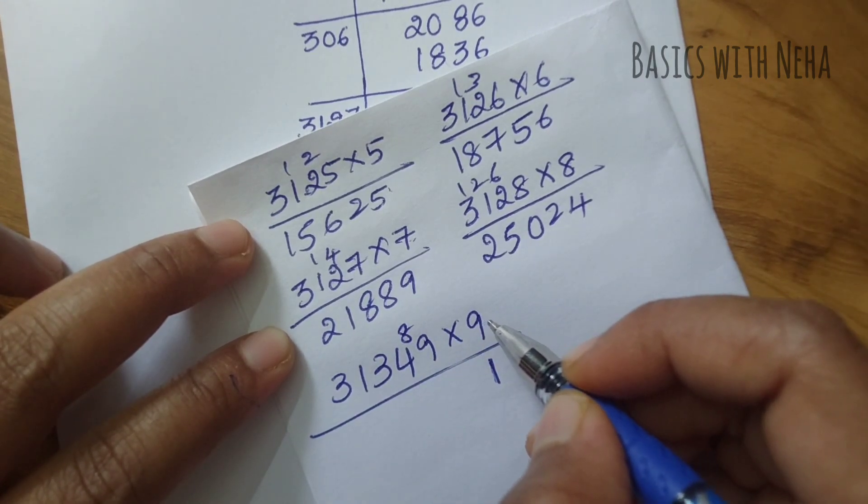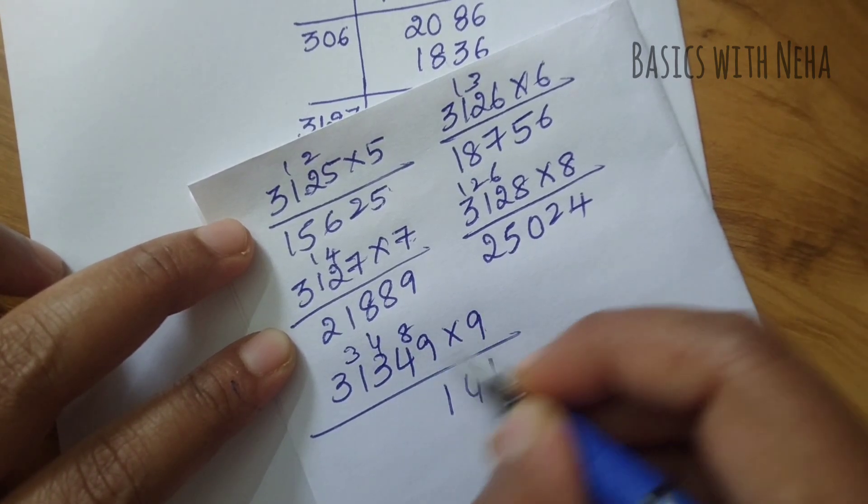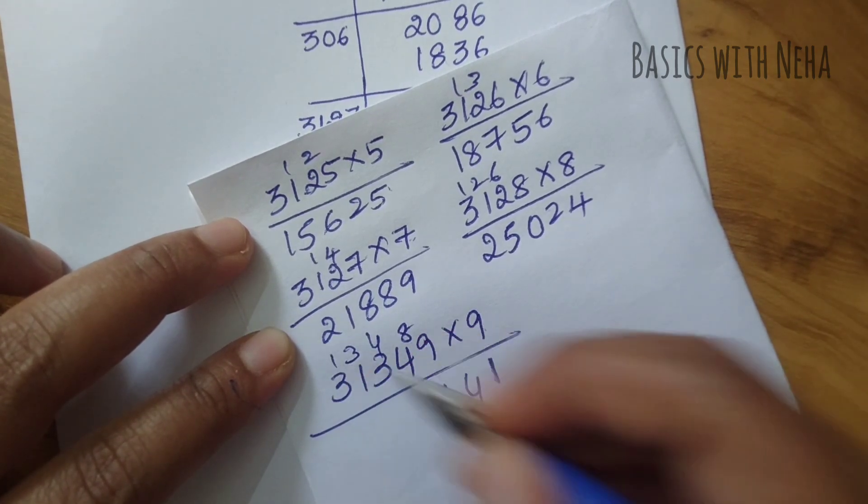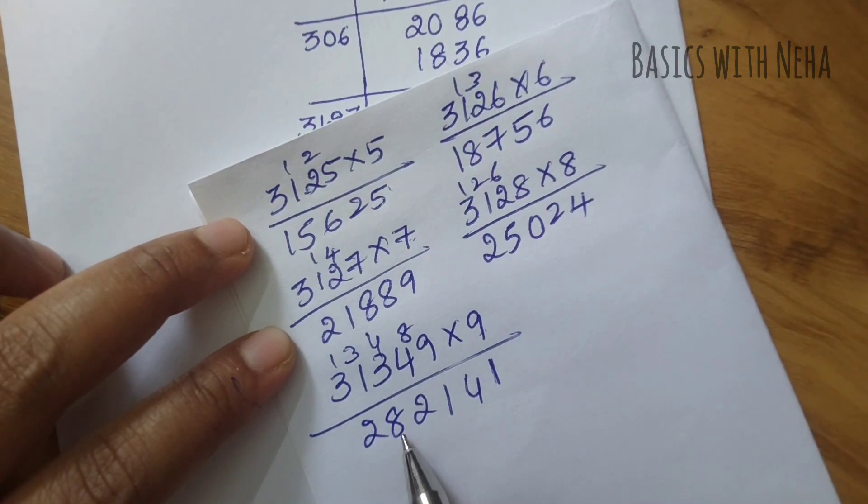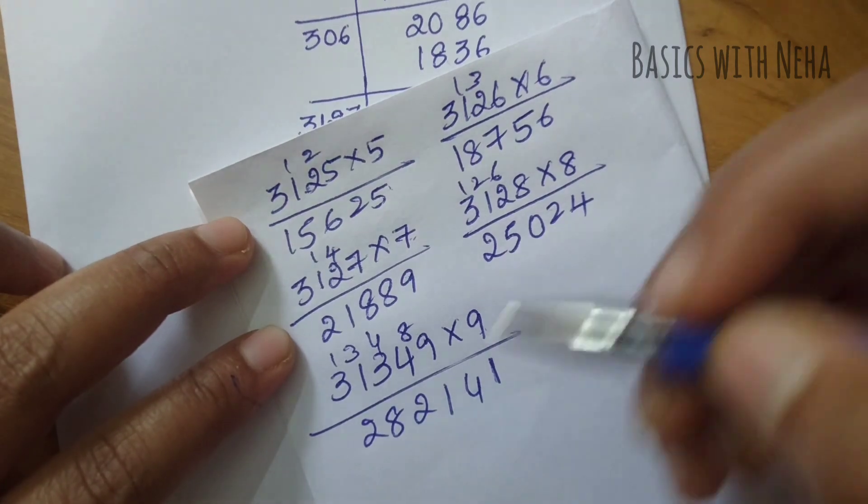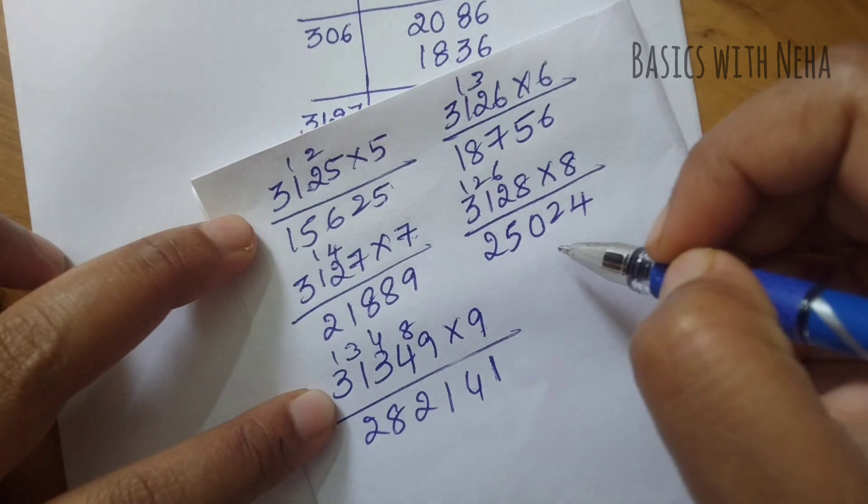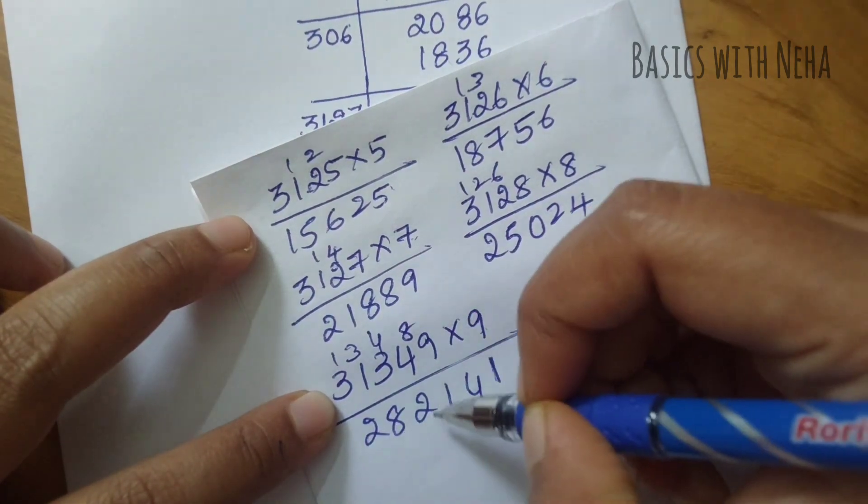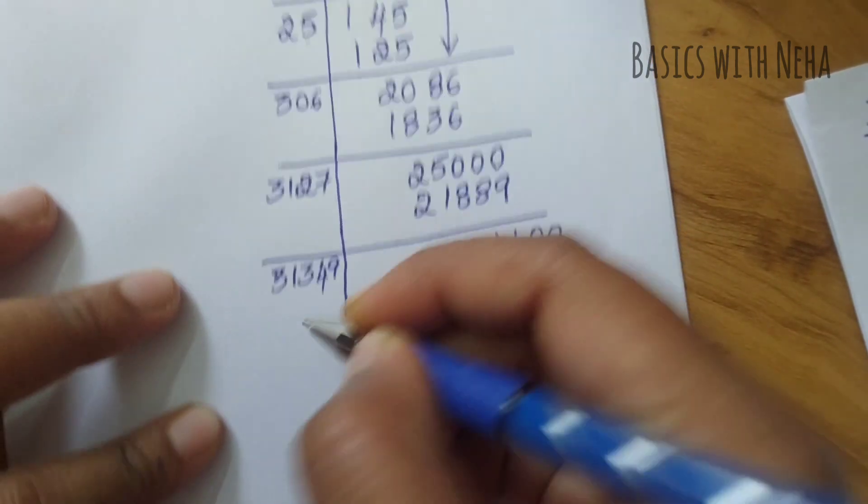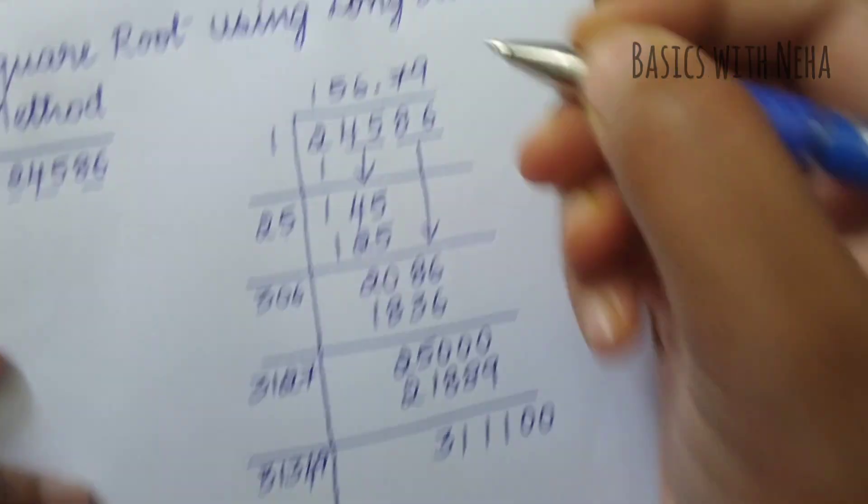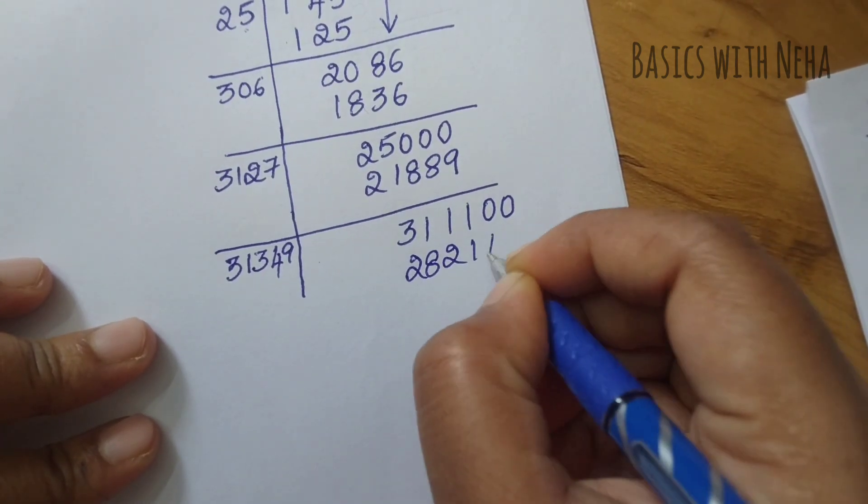31349 into 9: 9 times 9 is 81, 9 times 4 is 36, carrying forward... it is 282141. I cannot go with a double digit here, so I have to go with 9. I'm going to take 9 here and 282141.